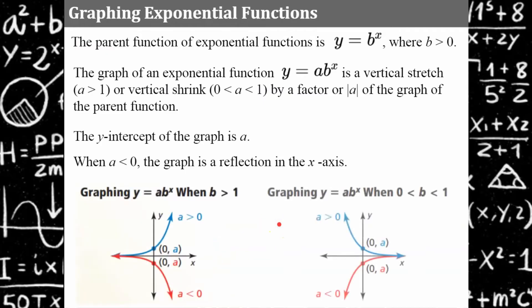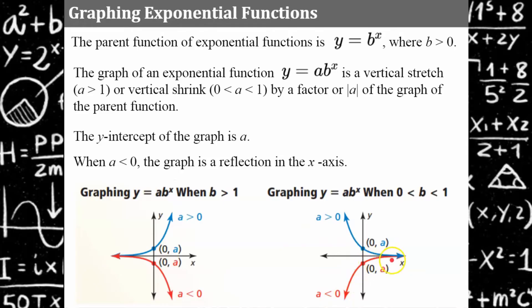When the base b is a fraction between 0 and 1, the graph flips the other way — it starts high on the left and approaches the x-axis. And when a is negative, it reflects down over the x-axis. These exponential functions do not cross the x-axis.